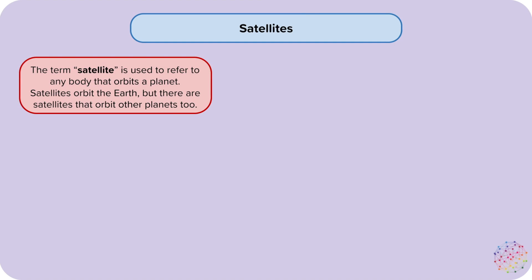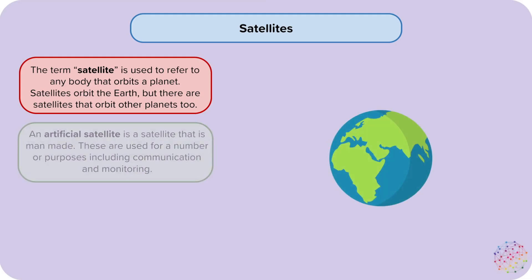The term satellite is used to refer to any body that orbits a planet. Satellites orbit the Earth, but there are satellites that orbit other planets too. An artificial satellite is a satellite that is man-made. These are used for a number of purposes, including communication and monitoring.